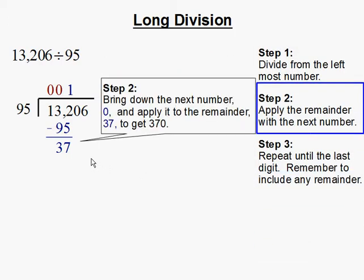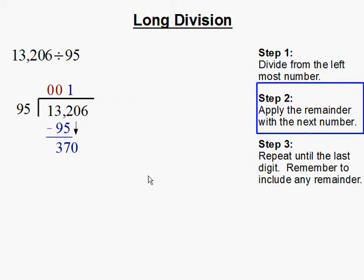Step 2, apply the remainder with the next number. And that means to bring down this next number which is 0 and apply to 37 to get 370. Repeat until the last digit. Remember to include any remainder.